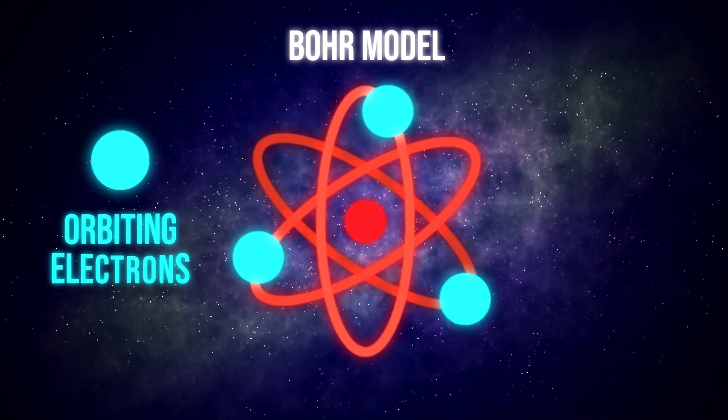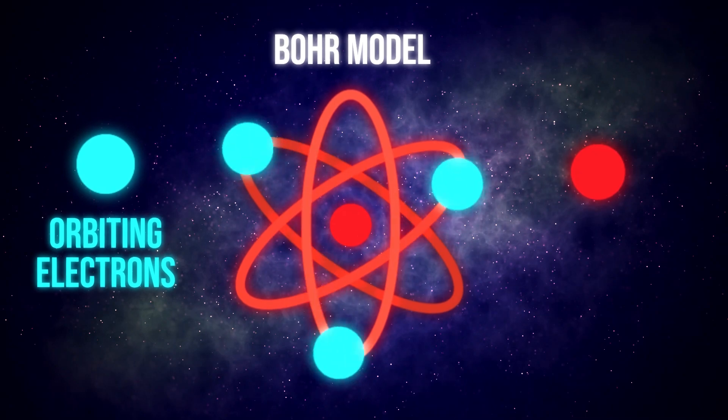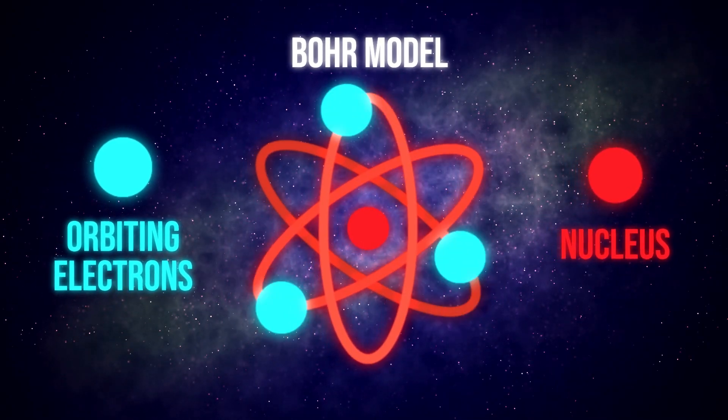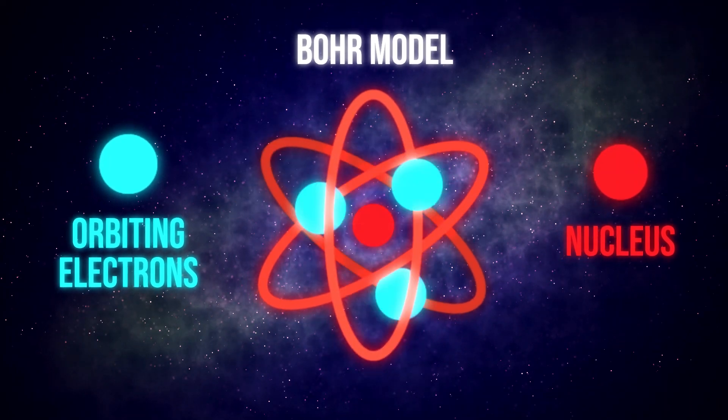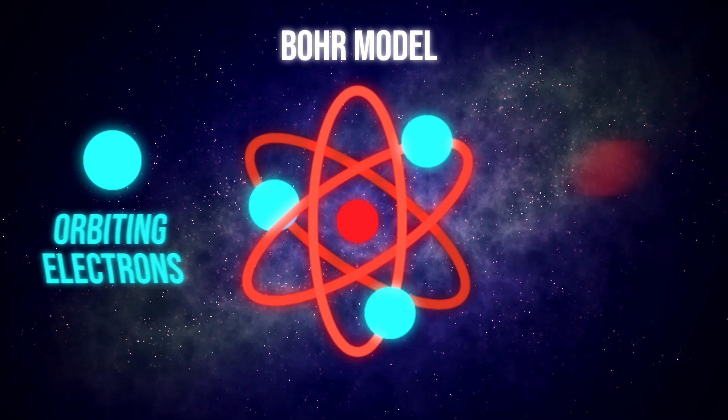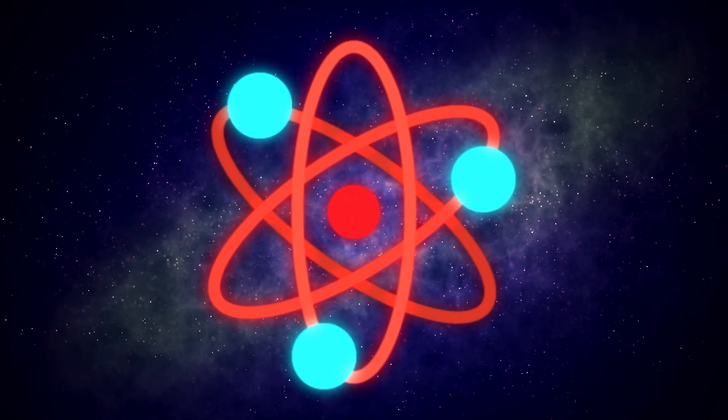Each orbit has its own energy level, and changes to that energy, like the transition of an electron from one orbit to another around the nucleus of an atom, happens in discrete quanta. The phrase quantum leap refers to the movement from one discrete energy level to another, with no transition, it's abrupt.